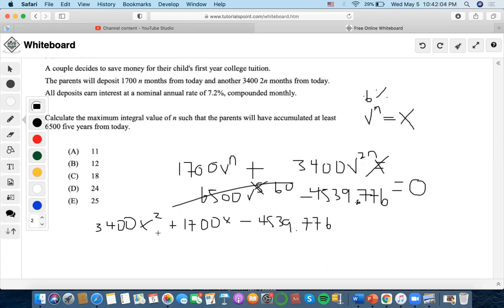Now, we're going to use the quadratic formula. We know that A is 3400. The quadratic formula is negative 1700 because that's B.